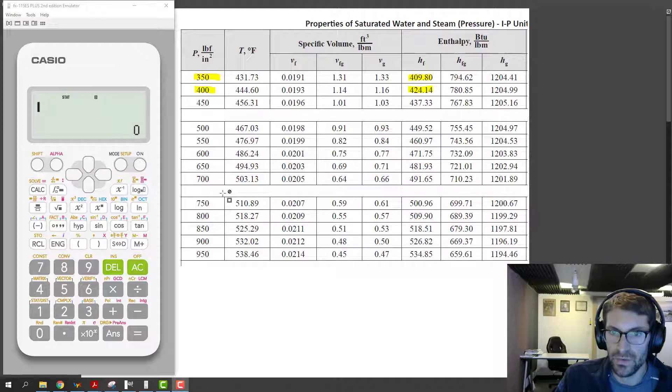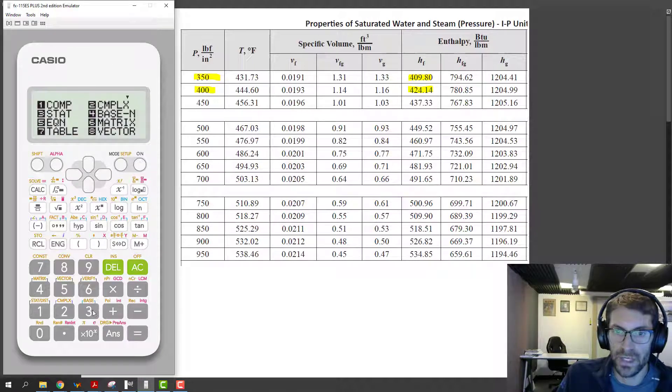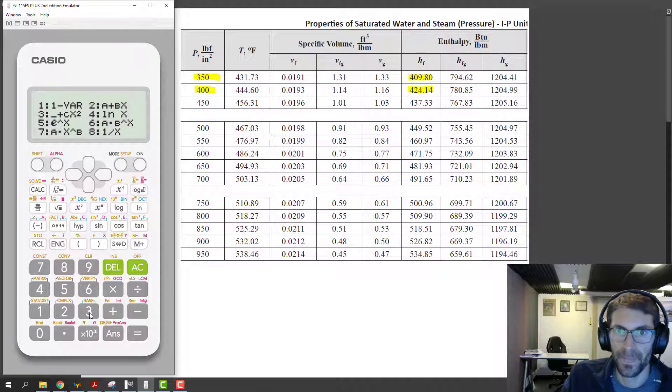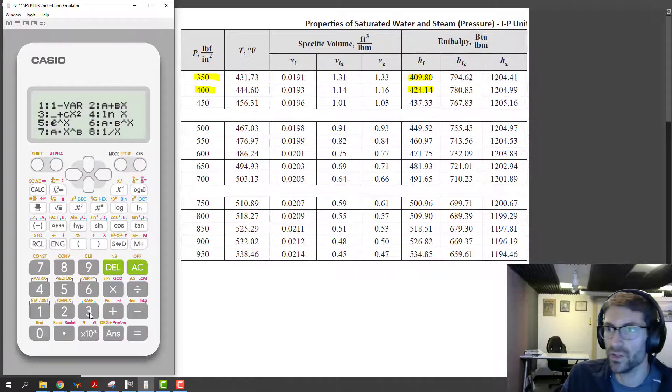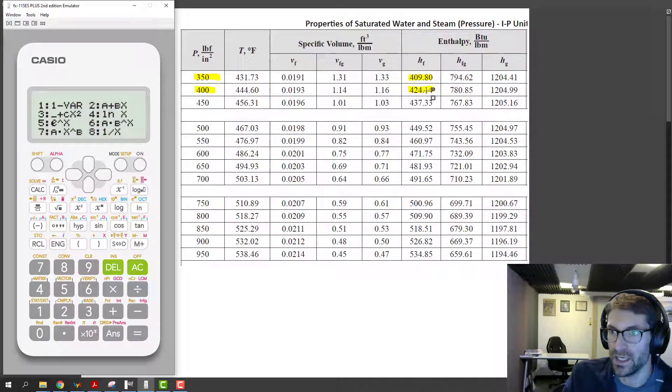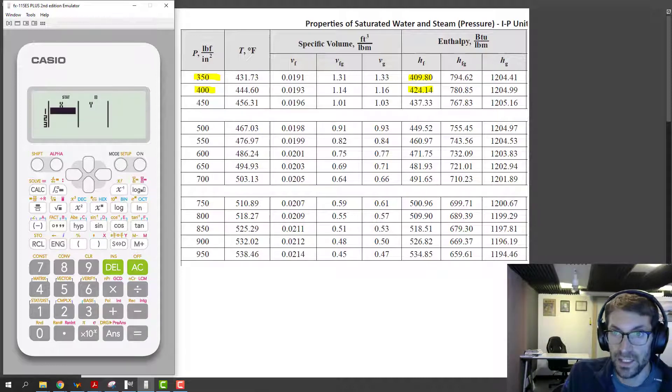So how do we actually do that? Well, we go to mode and then 3 for stat, and we're doing linear interpolation, so we're assuming that the relationship of the enthalpy is linear to that of the pressure as we go from 350 to 400.